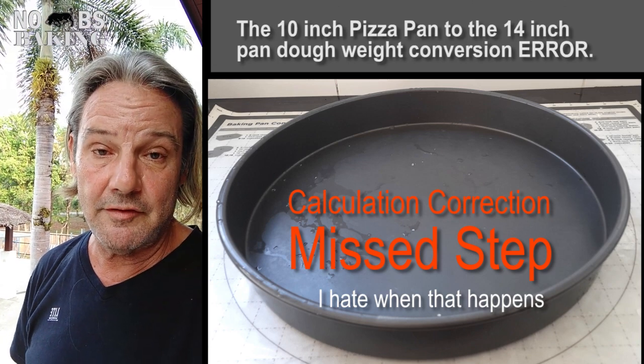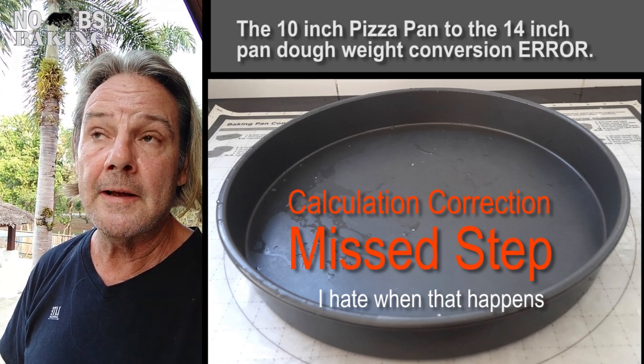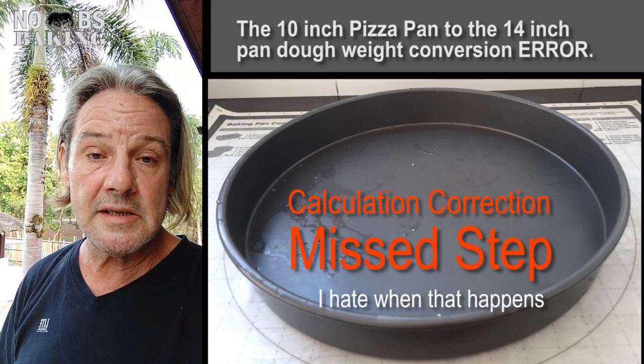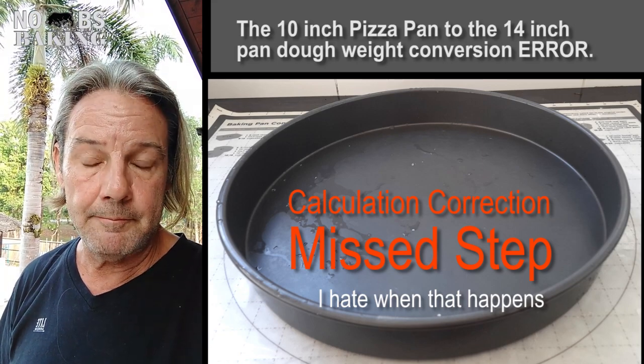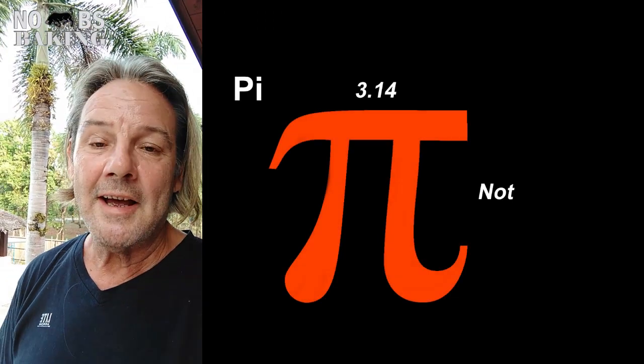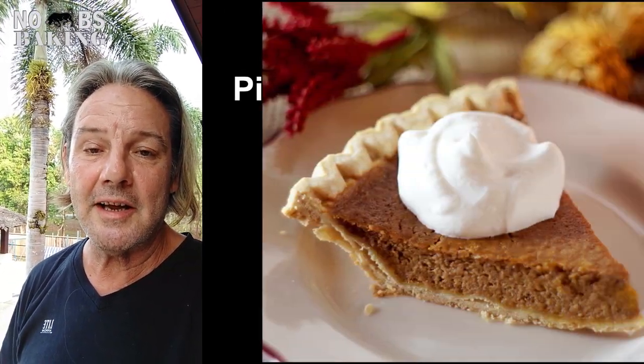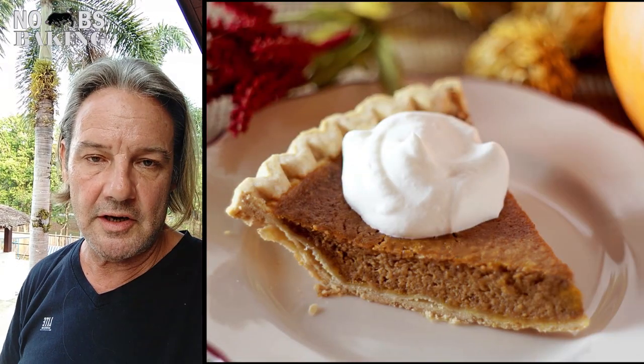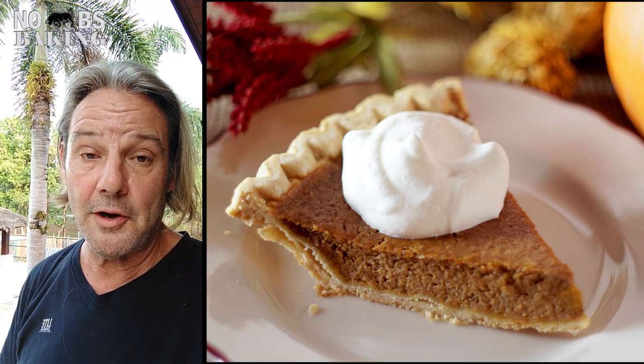Unfortunately I missed some information in calculating dough weight to pan size for the pizza pan. With circular pans we have to incorporate pi, and so ultimately I have the correction to that video right here. So without further ado, let's go.